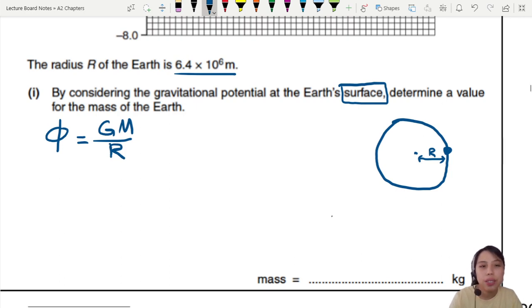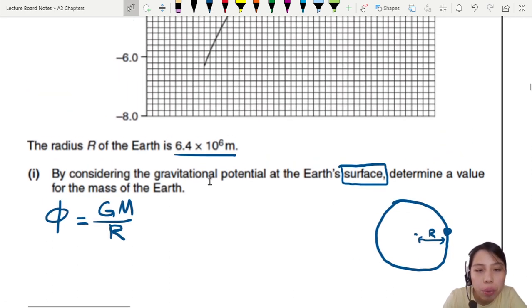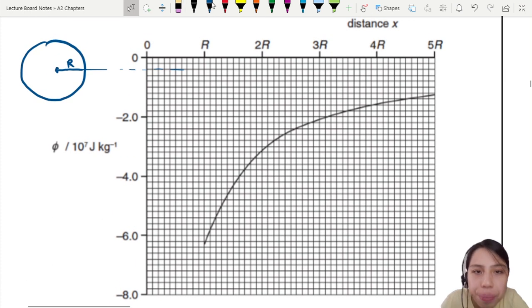Okay, so now we need to see at the Earth's surface. How do you find the mass? We need to read from the graph. So let's go and look at the graph. What is the potential at the Earth's surface? Because they say by considering the gravitational potential. 6.4 times 10 to 6. So at R. Okay, my graph is not very clear. So if you have the original paper here, you can go look it up. But at the Earth's surface, that's R.